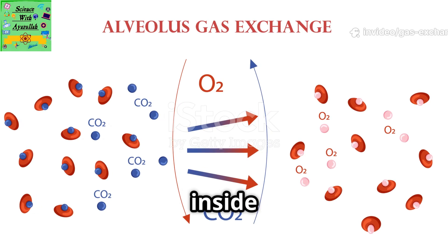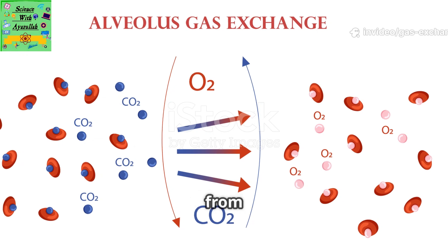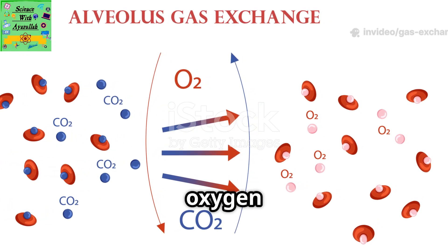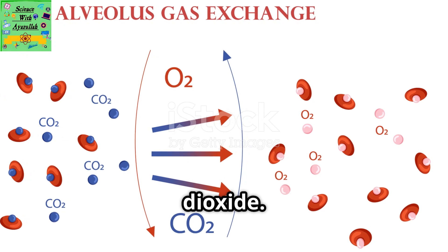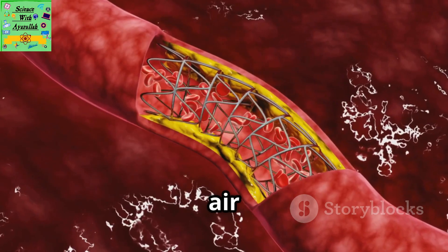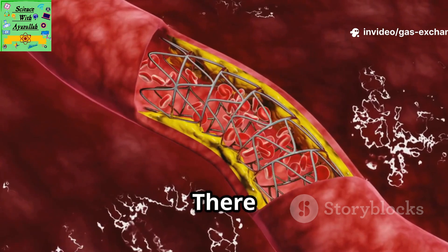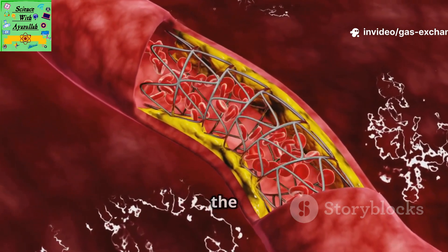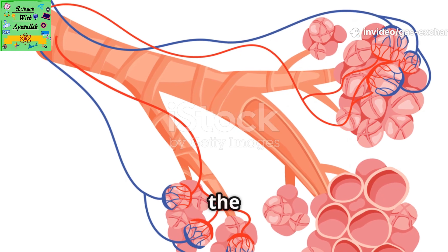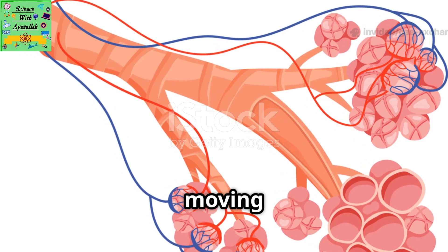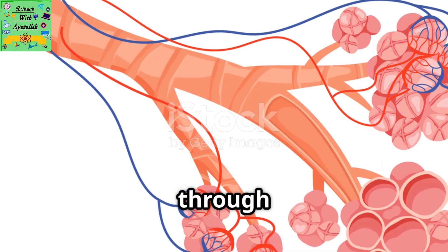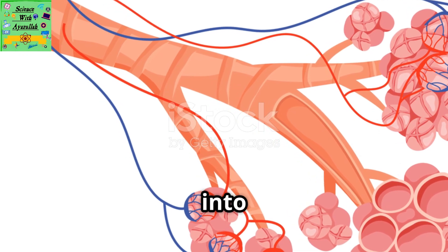Now think about the air inside the air sac. It came from outside the body, where the air contains a lot of oxygen and only a small amount of carbon dioxide. Inside the alveolus, this air is very close to the blood. There are only two very thin cells between the air and the blood. The oxygen particles in the air are a gas, so they are moving freely. They can easily move from the air, through these thin-walled cells, and into the blood.